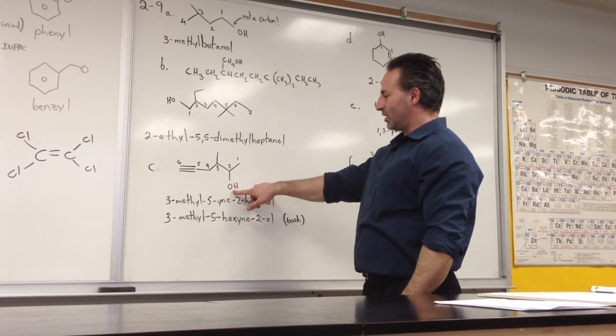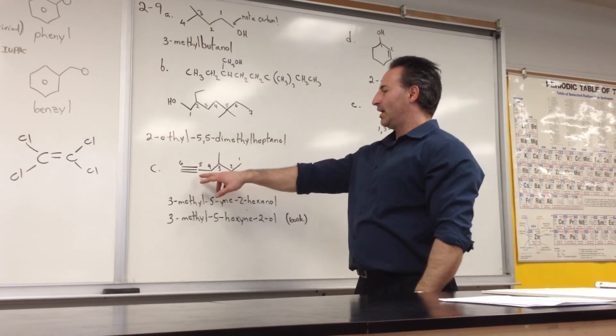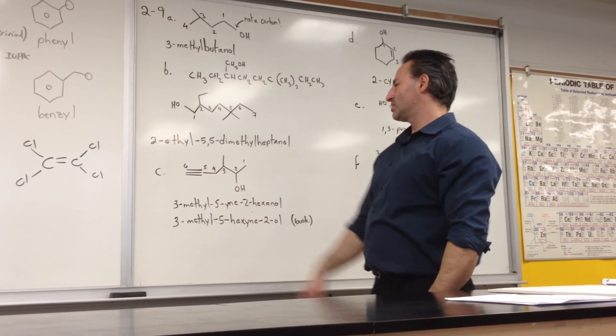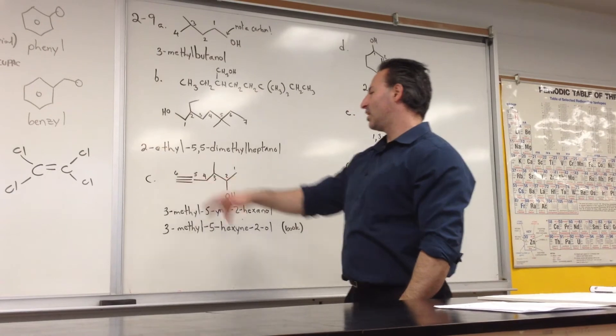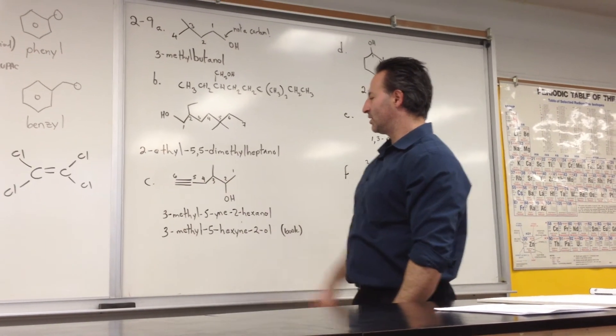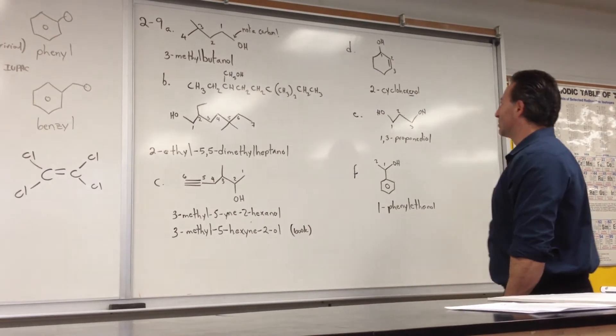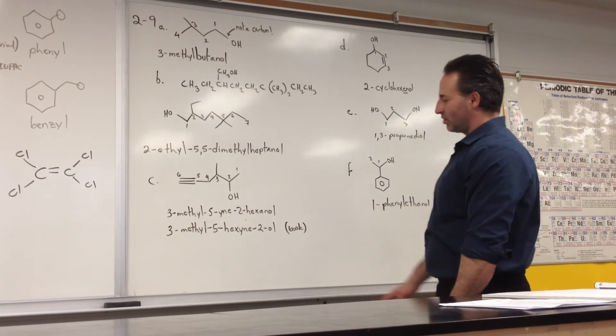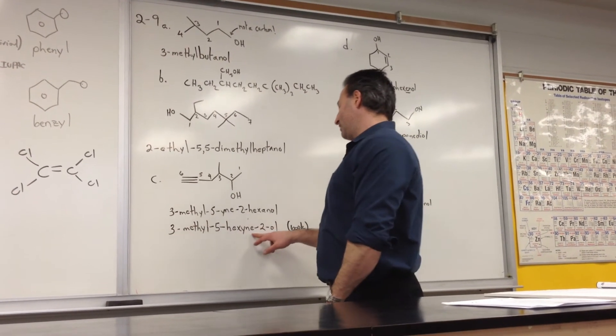The alcohol has the highest priority, and the alkyne group is at the 5th position. So this is a 6-carbon molecule with a methyl group at the 3rd position and a hydroxyl group at the 2nd position. So we call it, more correctly, 3-methyl-5-hexyn-2-ol.